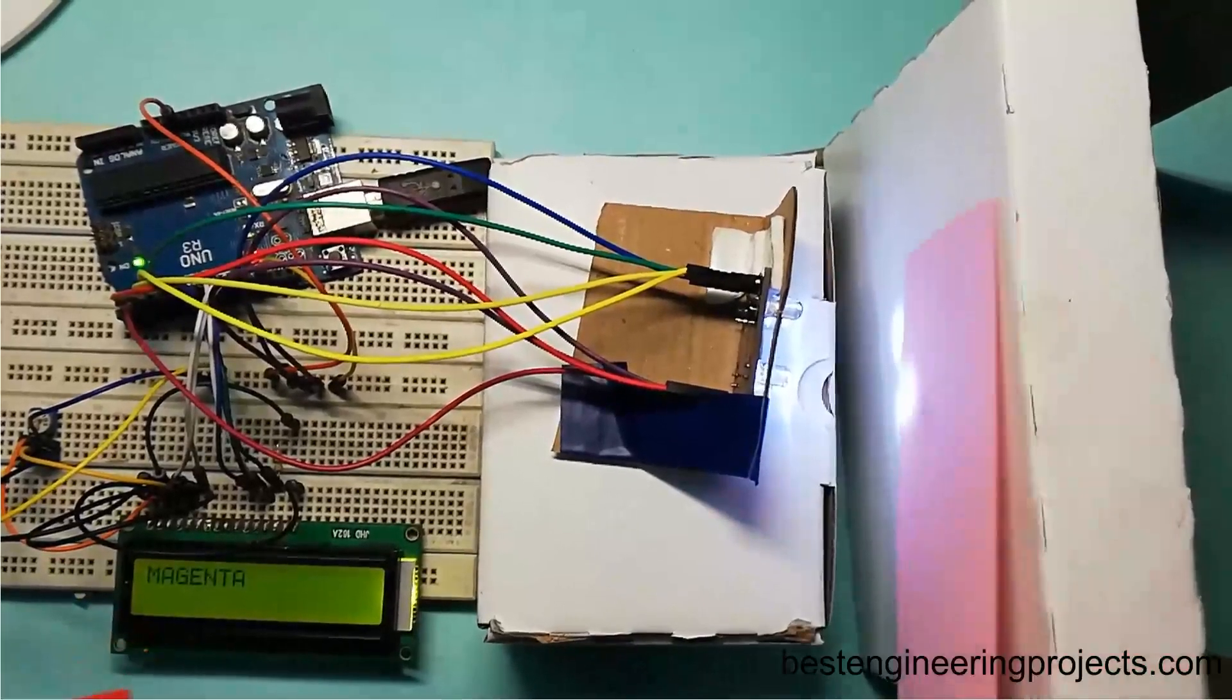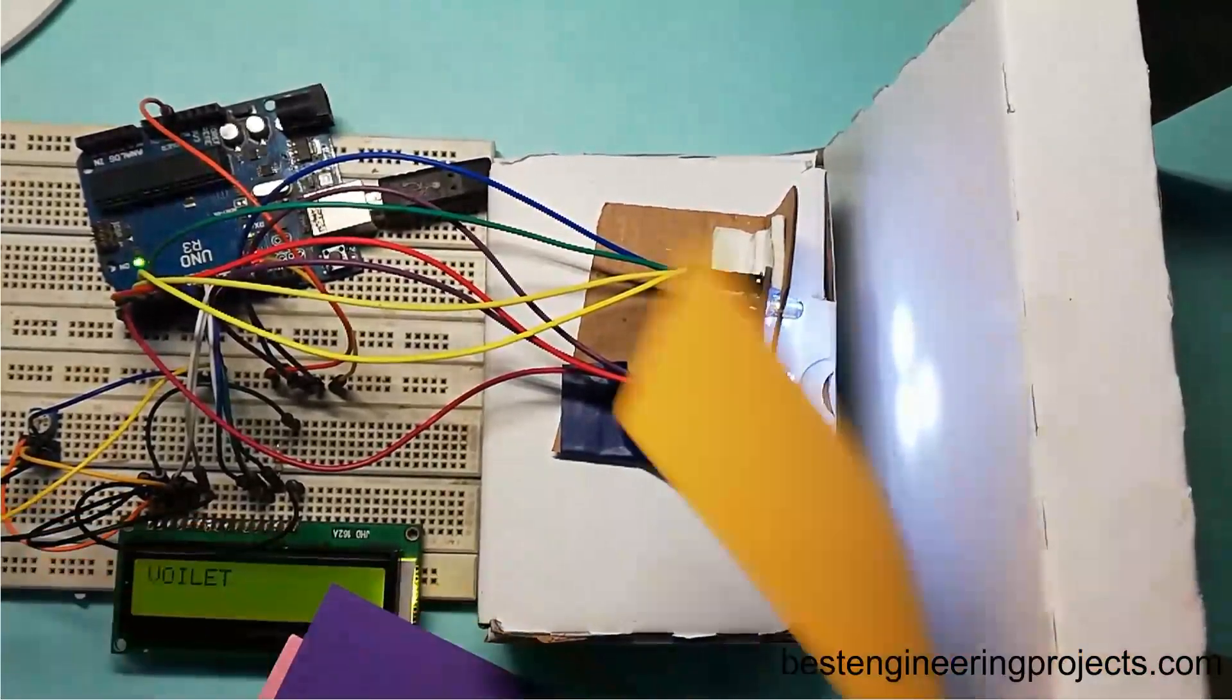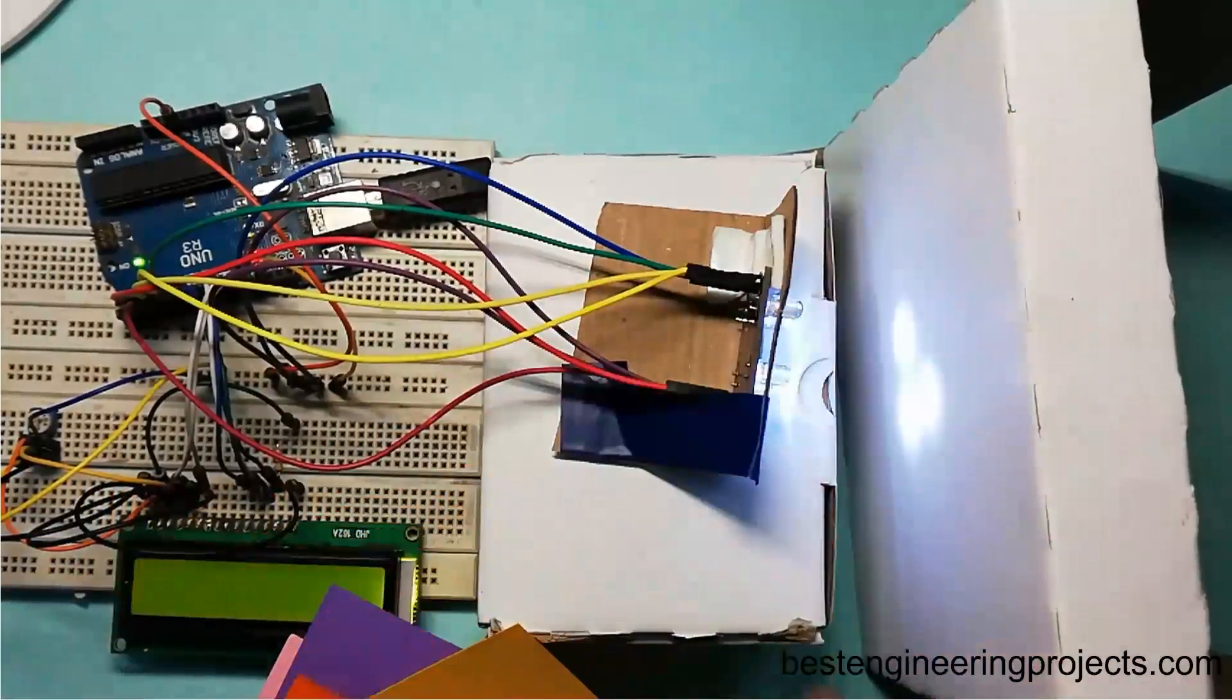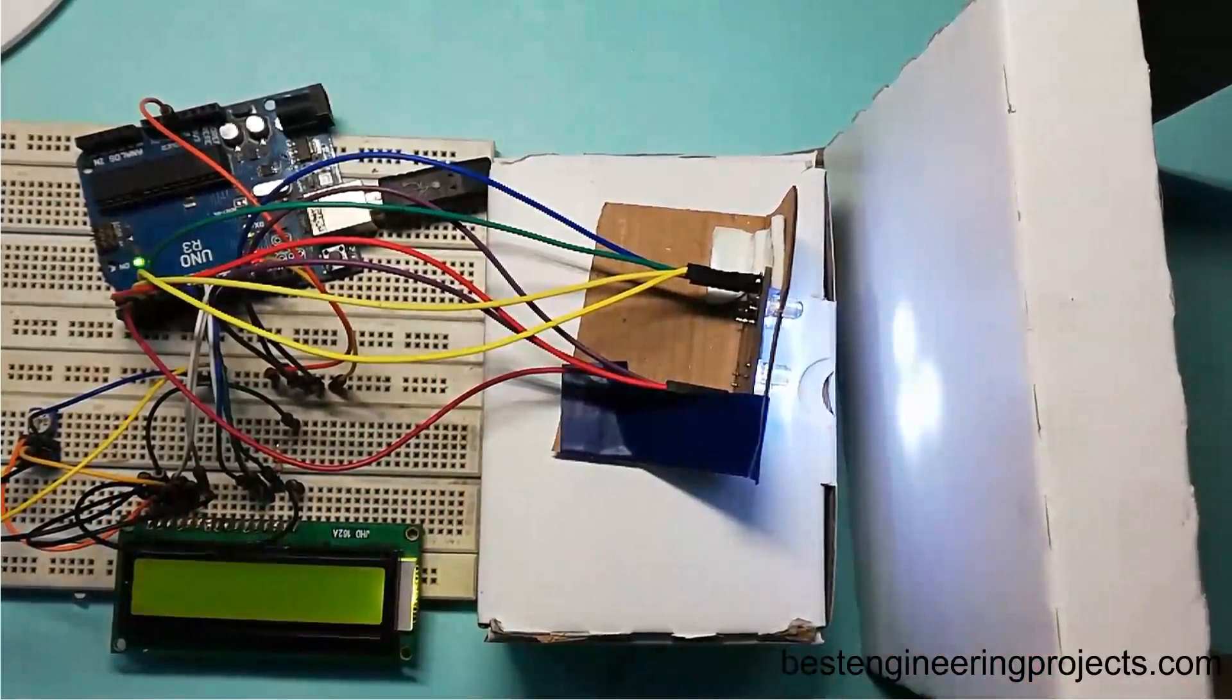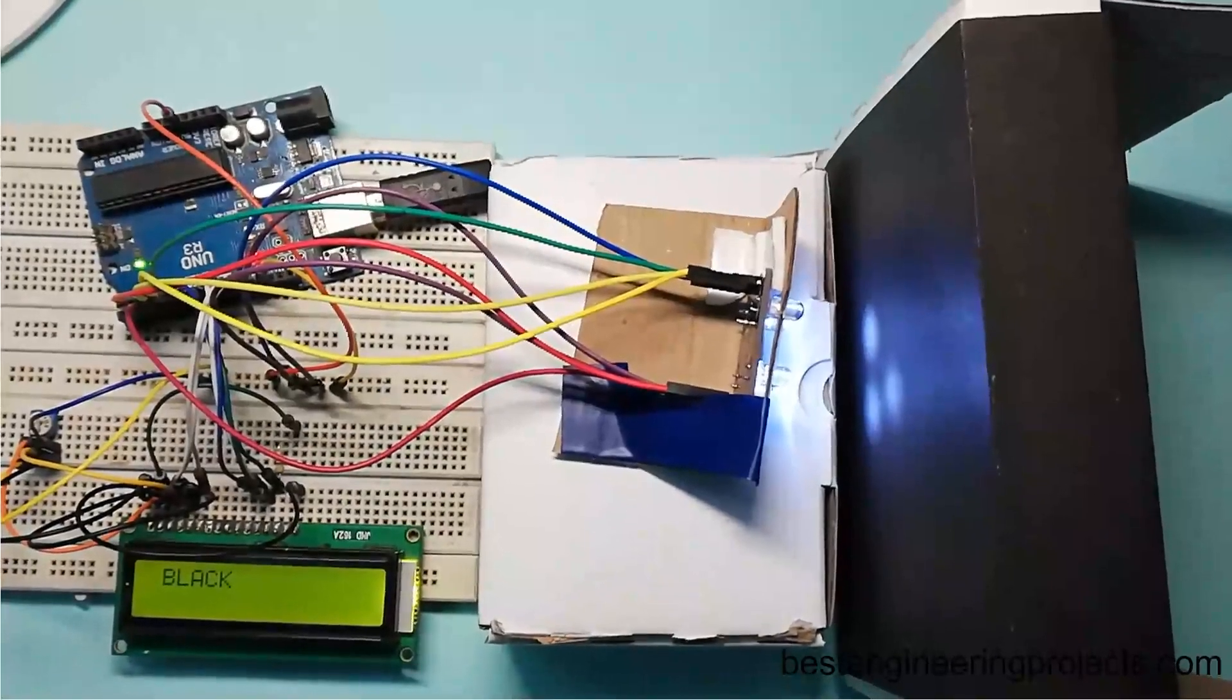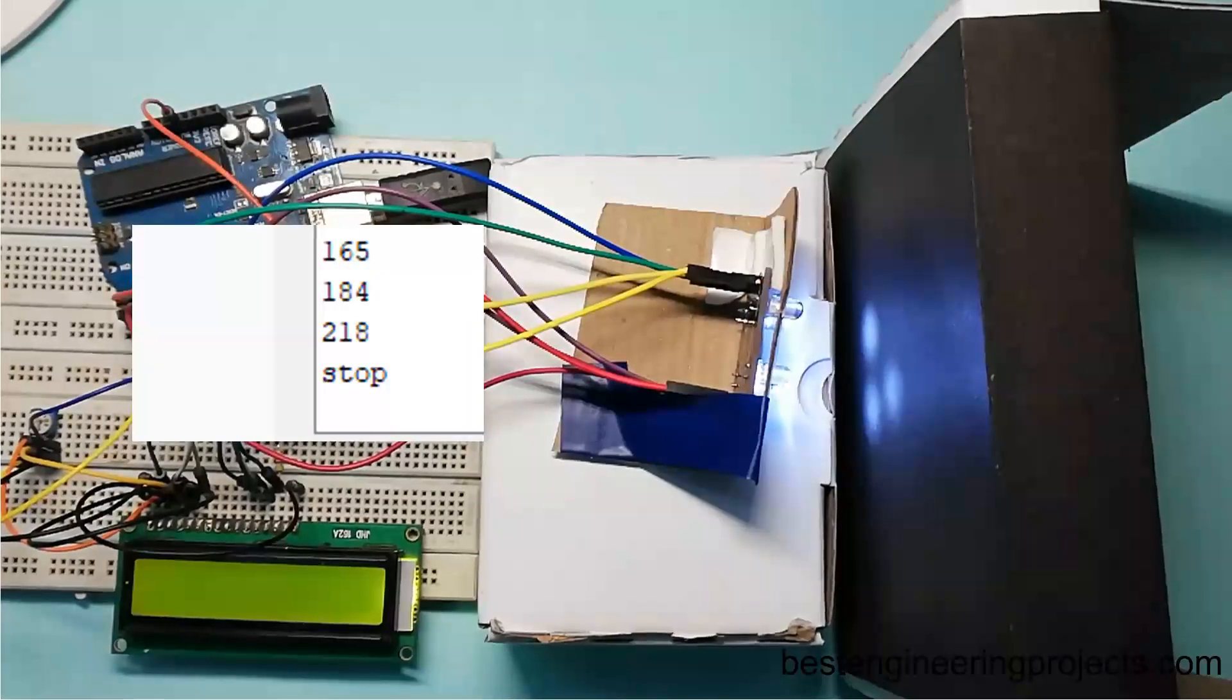Now, do this for different colors like magenta, violet, yellow, orange, at two different distinct distances. Note it down because we need all these values in the code later. Now for black, when I place this object close to the sensor, I got the value of 165 for red, 184 for blue, and 218 for green.